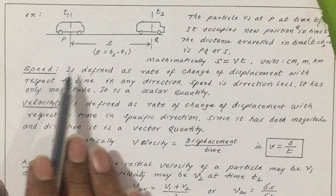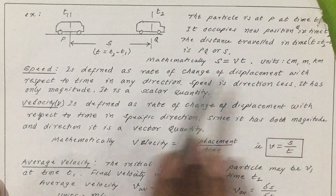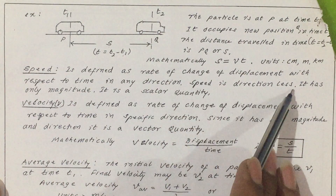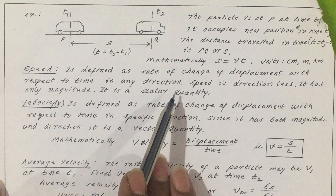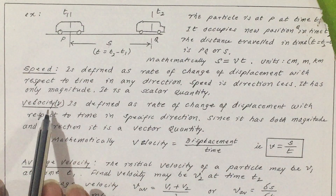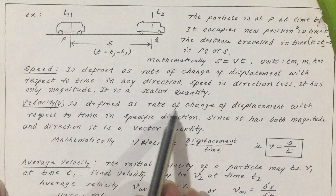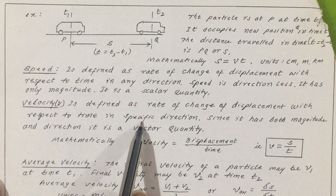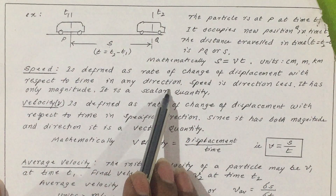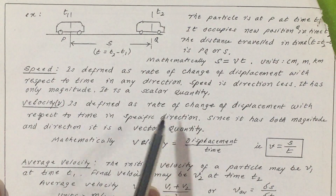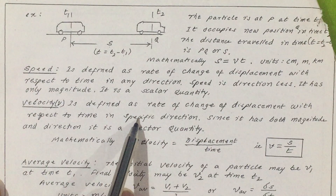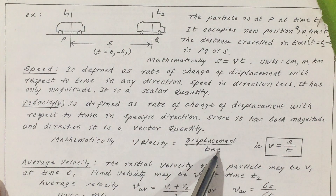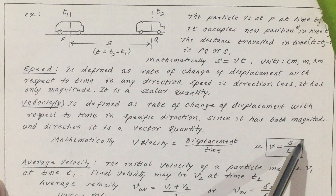What do we mean by speed? It is defined as the rate of change of displacement with respect to time in any direction. Speed is directionless — it has only magnitude; it is a scalar quantity. What do we mean by velocity? It is defined as the rate of change of displacement with respect to time in a specific direction. Velocity has magnitude along with direction, so it is a vector quantity. Mathematically, velocity V is equal to displacement S divided by time T.